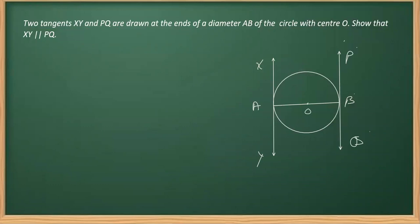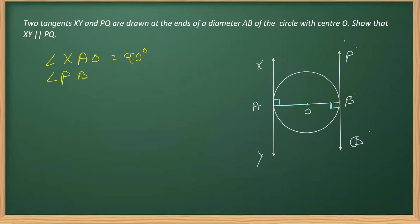We need to prove these two tangents are parallel. We know that OA is the radius and XY is a tangent. Since the radius is perpendicular to the tangent at the point of contact, angle XAO equals 90 degrees. For the same reason, angle QBO is also equal to 90 degrees.